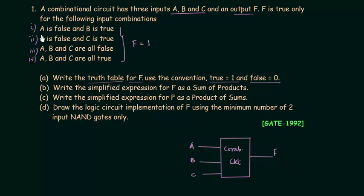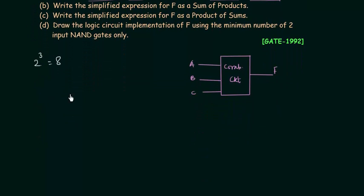From the first condition we can see the output F is equal to 1 when A is false and B is true. As we are having three variables, 2 raised to power 3 is equal to 8, so we have 8 possible combinations. I will first make the truth table for three variables.